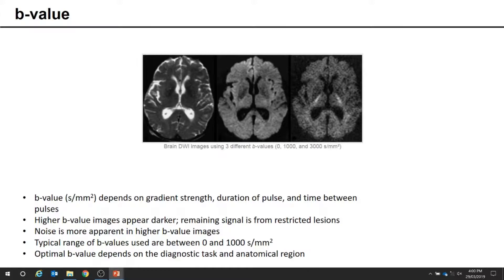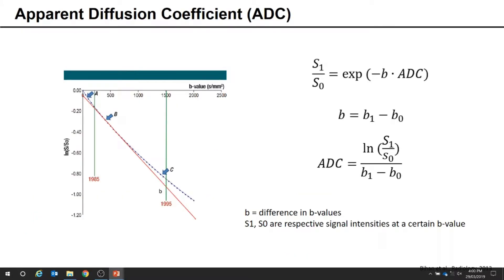To confirm whether there is abnormal diffusion happening, another image called an ADC map is used, generated from the DWI. ADC is the apparent diffusion coefficient, which is used in MRI to quantify the degree of diffusion in a voxel.